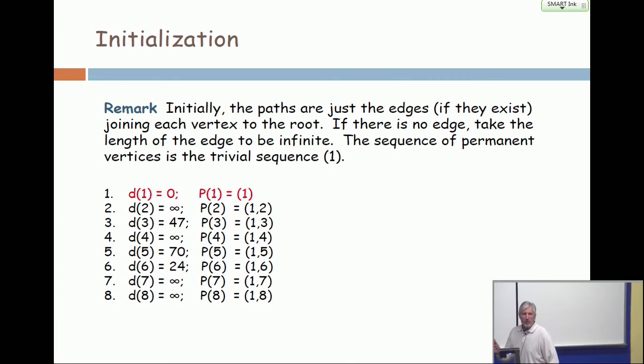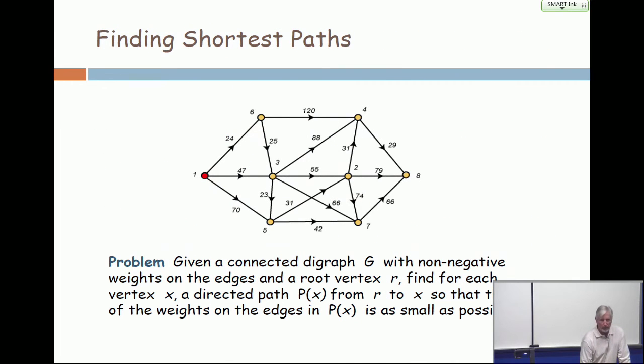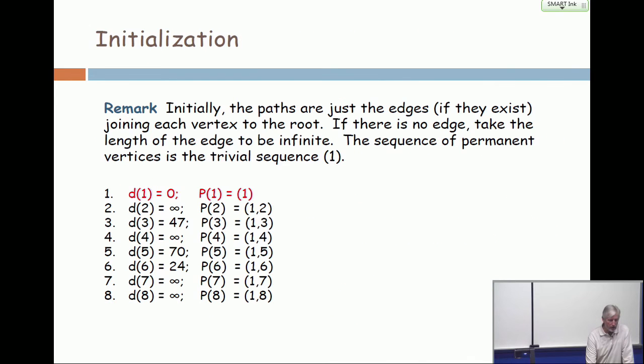Distance to two is infinite. That means there's no edge from one to two. Now, let me just back up. Look at the picture. There's no edge from one to two. Agreed? And that's why, when I initialize it, the path is to go directly from one to two, but the price you pay is infinite. Now, all the other ones are the weights, the true weights. There's a weight of 47, a weight of 70, and a weight of 24.